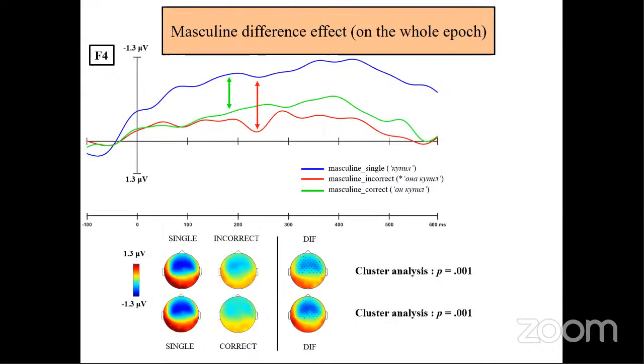On the screen, you can see the waves from single verb conditions and conditions with he and she pronoun, all in masculine forms. The condition with the he pronoun will always be correct and with she pronoun, always incorrect. So what we can see? We see the overall difference between all three conditions. And the main thing is that the most activation goes for the single verb and neither correct nor violated condition reach the level of this single verb activation.